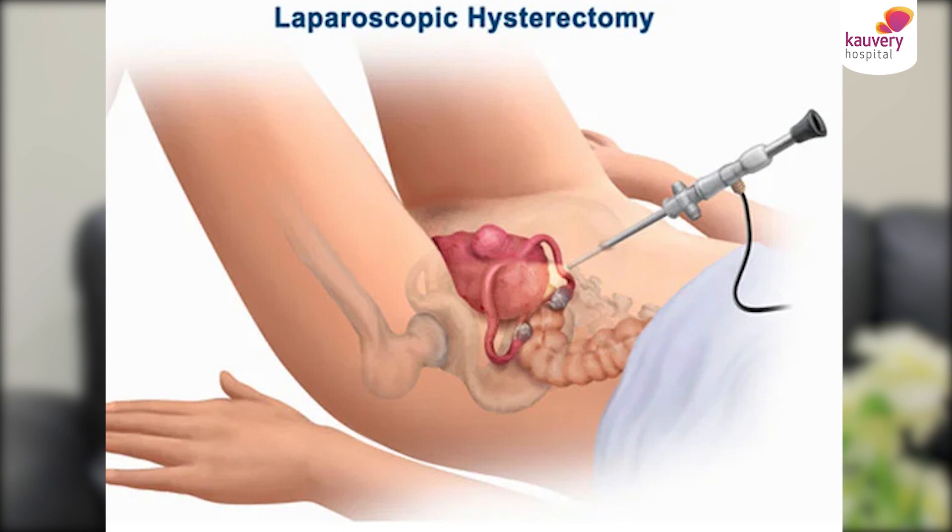Then you have to decide whether the fibroids alone need to be removed, or for older patients if a hysterectomy is advised, you should discuss whether to undergo hysterectomy with your gynecologist. The next common benign condition is ovarian cysts.